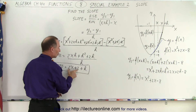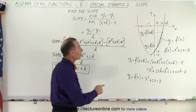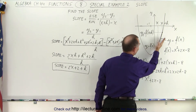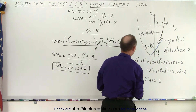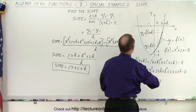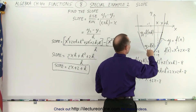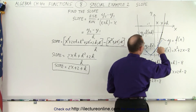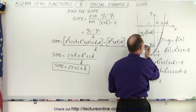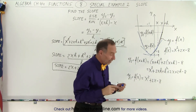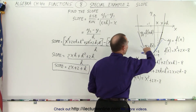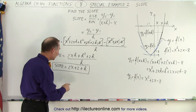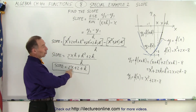Eventually, when h goes to 0, the slope is equal to 2x plus 2. That means the slope anywhere along this curve — the tangent line — anywhere along this curve, I could be talking about this point right here, and that would be the tangent line, or this point, or this point. In other words, I can find the slope of the tangent line anywhere along that curve by simply allowing h to go to 0 and by plugging in whatever value for x I want to use.